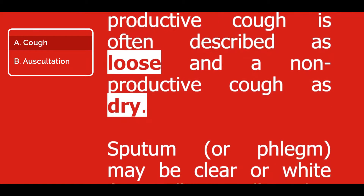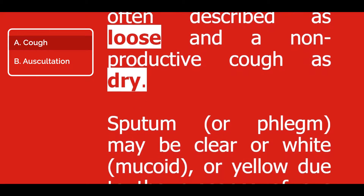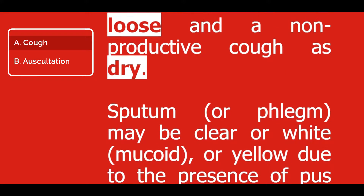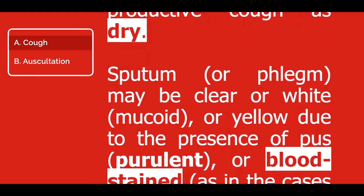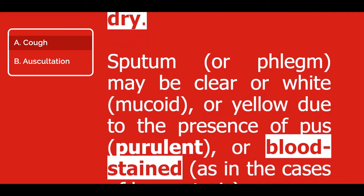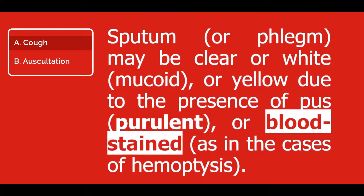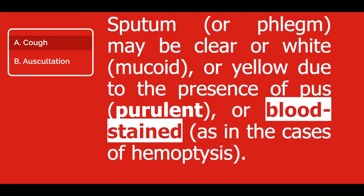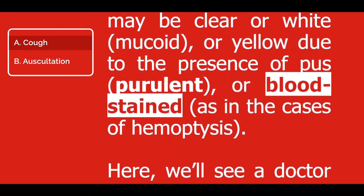Sputum or phlegm may be clear or white — mucoid — or yellow due to the presence of pus — purulent — or bloodstained, as in the cases of hemoptysis.